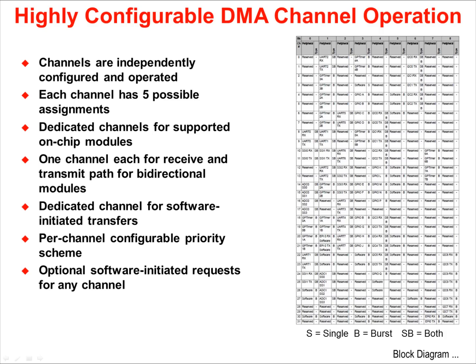All 32 DMA channels are listed here. Each channel in the list has 5 possible assignments that can be made to it. This is significantly more flexible than most DMA channel assignments. Note the type of transfers can be single, burst, or both.